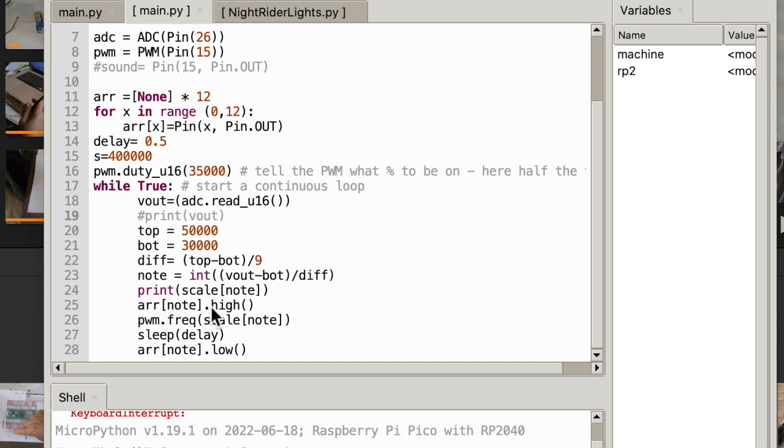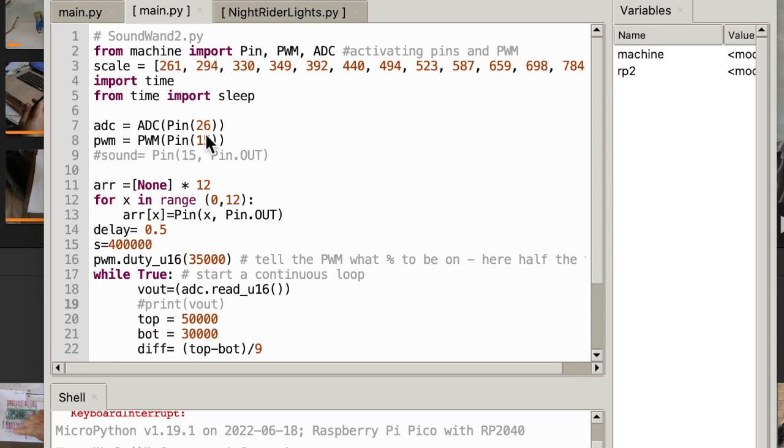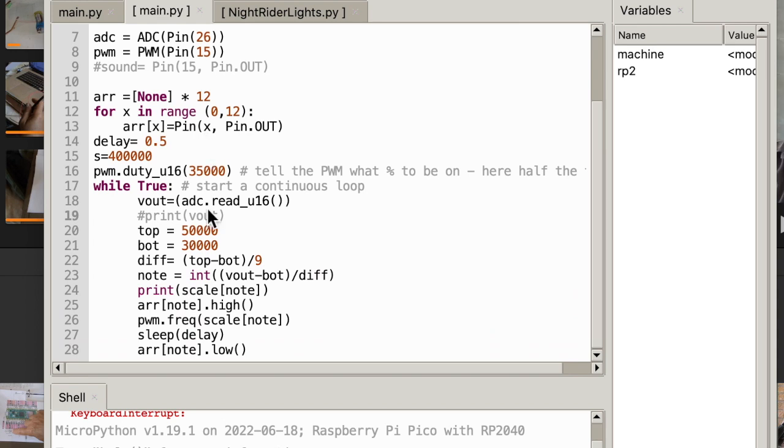Then we printed whatever note we were registering. And then we made the pin high of that particular note. And then we played on pulse width modulation, that is pin number 15. We played a particular note. Say it was C. We played 261 here. So here we just played the note. Then we slept, we left the note on for half a second. And then we turned the light off.